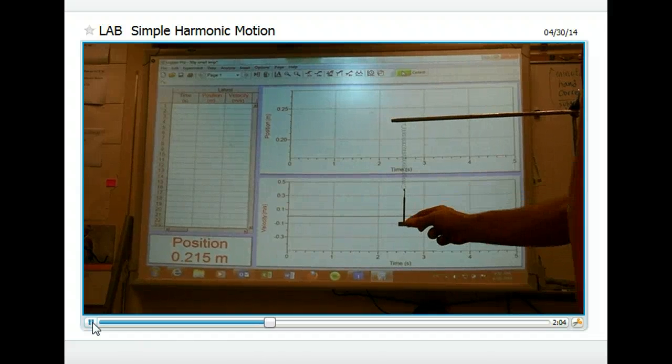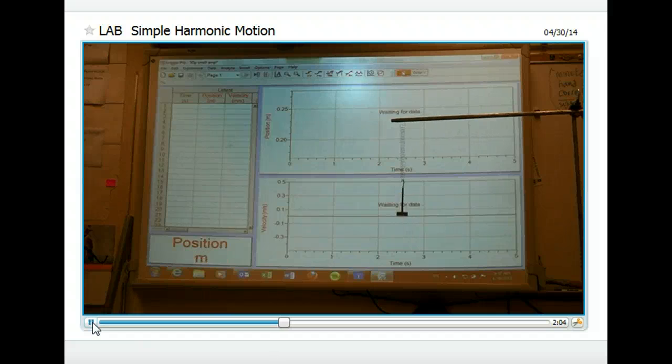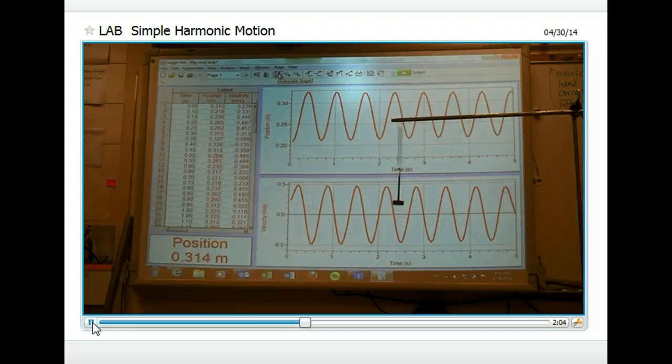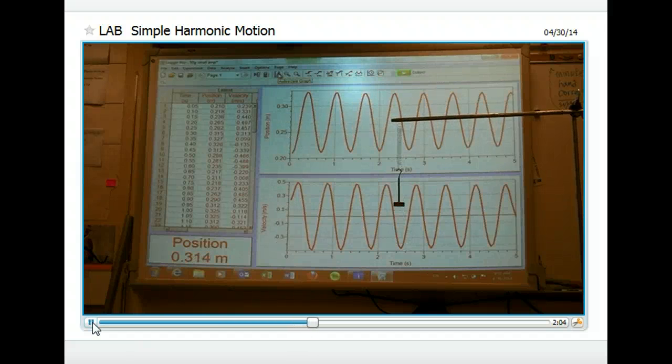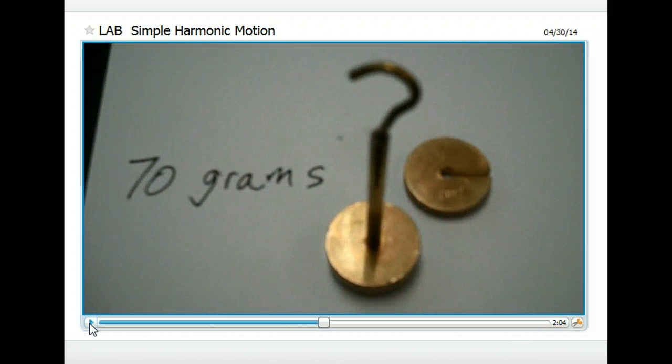Next, we'll try it again, but this time use a larger amplitude. We're going to compare the periods of these two oscillations. Same spring, of course, just different amplitudes. There is our oscillation for the second 50 gram amplitude. That data will be provided to you.